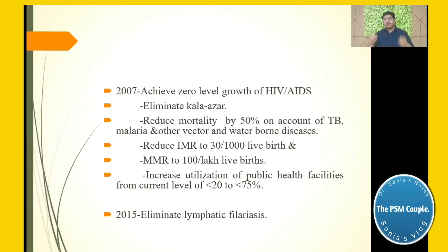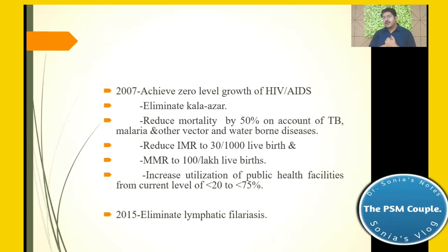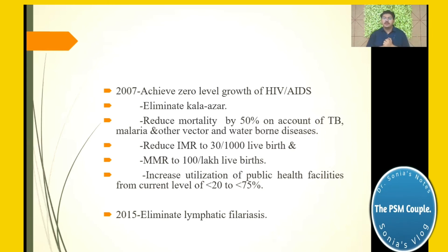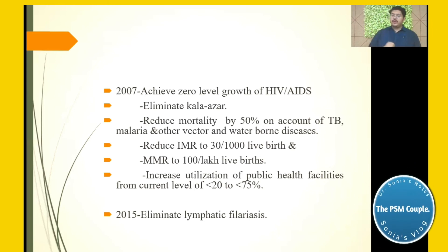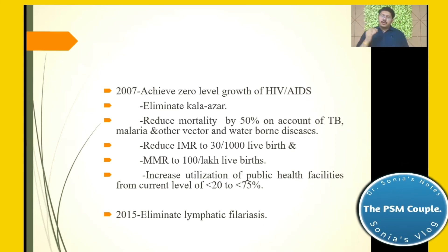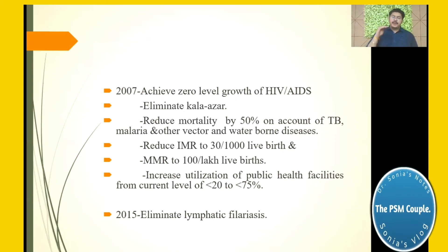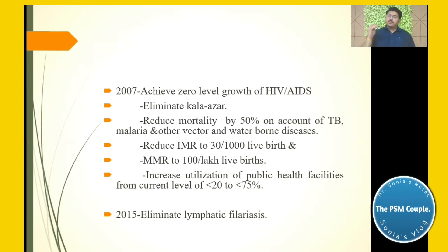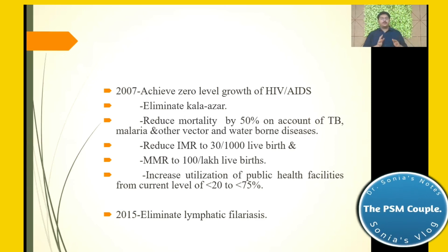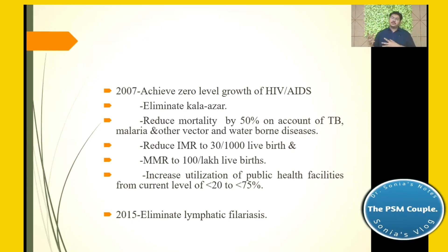Specific targets include: reducing mortality by 50% on account of TB, malaria, and other water-borne diseases; reducing maternal mortality rate to 100 per lakh live births; reducing infant mortality rate to 30 per thousand live births; and increasing utilization of public health facilities from less than 20% to up to 75%.